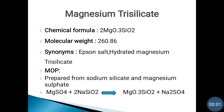Hello everyone. In the previous lecture we had seen the classification of antacids. In that we had seen systemic antacids — sodium bicarbonate — and from non-systemic antacids we had finished aluminium containing antacids: aluminium hydroxide, aluminium phosphate, basic aluminium carbonate. From calcium containing antacids we had seen calcium carbonate and calcium phosphate. Next we had started magnesium containing antacids, and we had finished with magnesium carbonate.